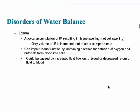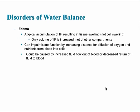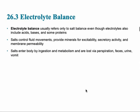The third disorder of water balance is edema — the atypical accumulation of interstitial fluid, resulting in tissue swelling. It's not specifically cell swelling but tissue swelling, occurring only when interstitial fluid volume increases but not other compartments. This can impair body function very significantly and could result from low albumin in the plasma, causing fluid to move into the interstitial fluid. This is all extremely important for electrolyte imbalance, referring to the salt balance, including electrolytes, acid bases, and some proteins.